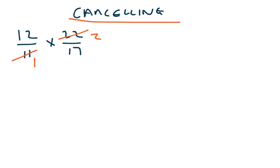So that's much easier. I can now multiply 12 by 2 equals 24, and 17 multiplied by 1 is 17. That's it, that one fixed.